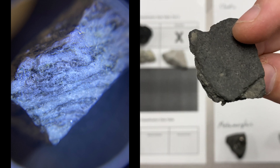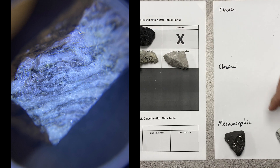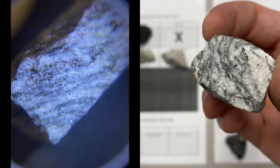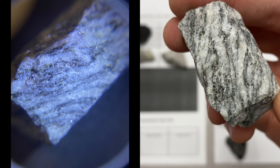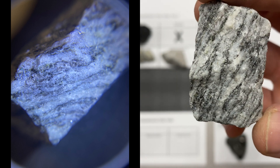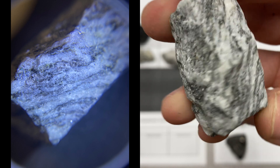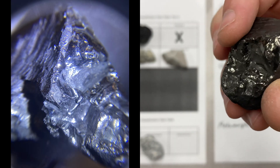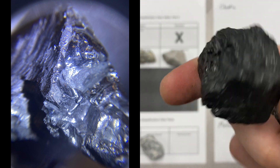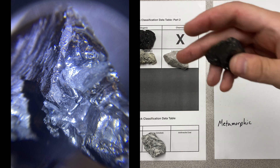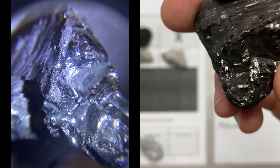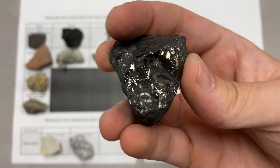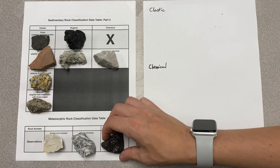Gneiss actually starts off as shale. Shale can be metamorphosed into many different rocks — slate, phyllite, schist — and its final metamorphic state is gneiss. This banded appearance comes from the insane pressure: the minerals go from being arranged in completely random ways to lining up perpendicular to the pressure applied to them, so the dark and light minerals are separated from each other in our piece of gneiss. Finally, anthracite is bituminous coal — a sedimentary rock — that has been metamorphosed into anthracite, which has a very shiny appearance, is much harder, but also much lighter because many impurities have been removed, making it a much more pure sample of carbon and hydrogen which makes up our fossil fuels.